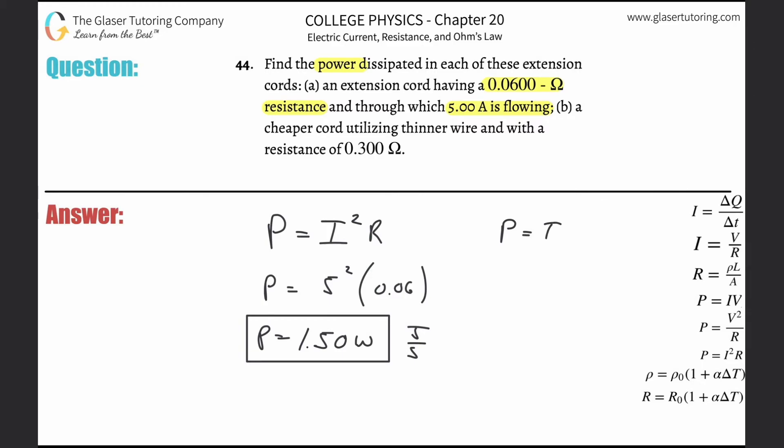It's going to be the same calculation - 5 squared multiplied now by 0.3. So this is going to be 25 multiplied by basically one-third, or almost one-third - 0.3. That works out to be 7.5 watts.